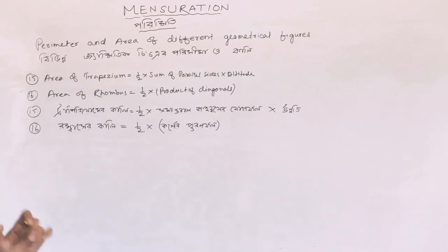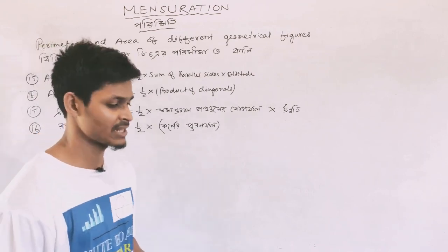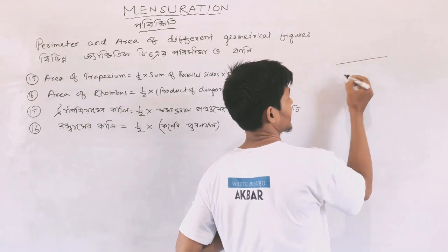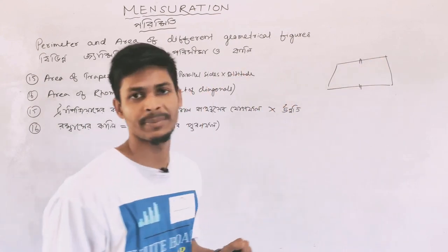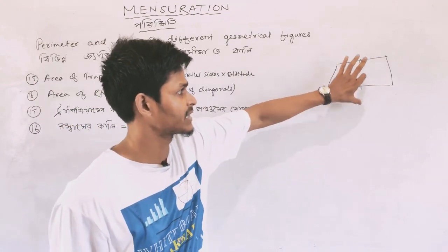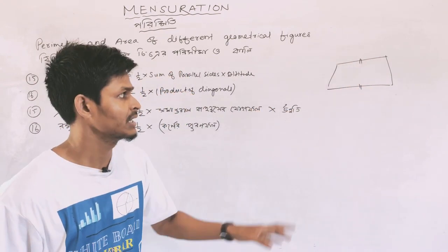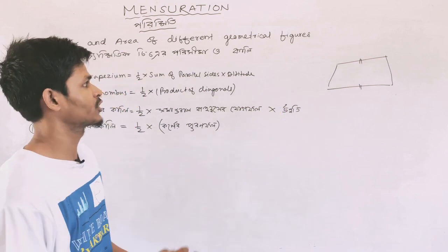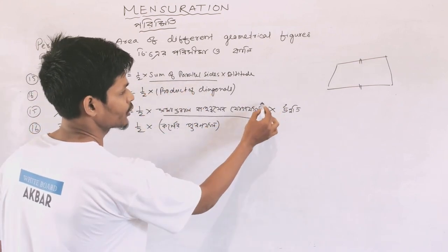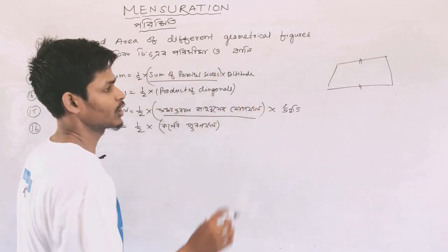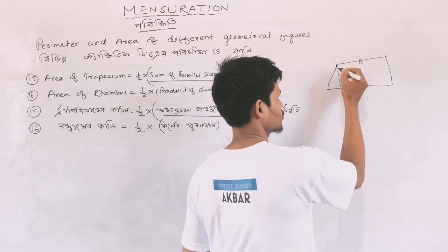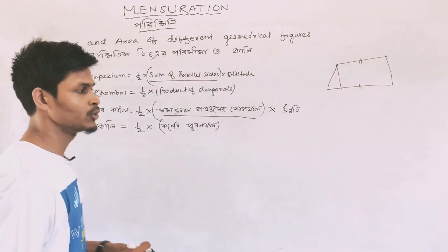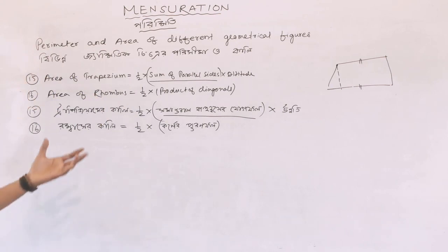Next is Trapezium. We have the area of trapezium and area of rhombus. Area of trapezium is half into sum of parallel sides into altitude. A trapezium has two parallel sides, and we multiply their sum by the height, then take half.